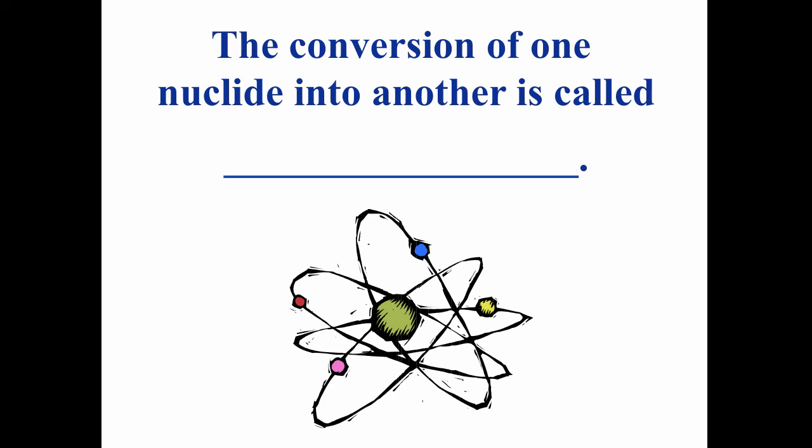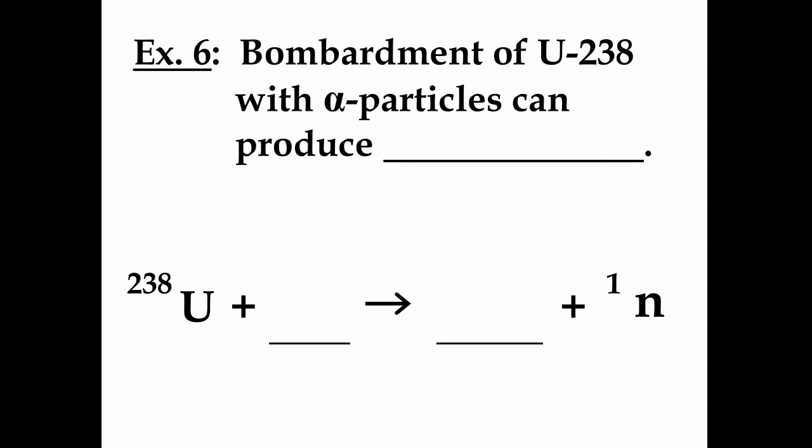In general, conversions of one nucleus, one radioisotope, which is also called a nuclide, into another is called a transmutation. Nuclear processes do convert one element, one nucleus, into a different type of nucleus. This can occur naturally, like the spontaneous emission of alpha or beta or gamma radiation. But it can also occur when particles collide, which can occur in nature and can be done in a laboratory or in an artificial way.